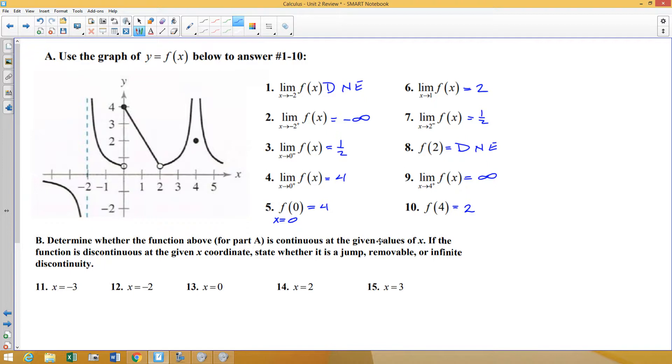Determine whether the function above is continuous. If it is discontinuous, then state whether it's jump, removable, or infinite. At negative 3, so negative 1, negative 2, negative 3 is right here. It looks like I'm blowing straight through negative 3, so that is continuous. At negative 2, that is a vertical asymptote, which is known as an infinite discontinuity. At x equals 0, left and right sides approach finite numbers, but they are different. That creates a jump. Or you can just look at the graph and tell that we are jumping from 1 half up to 4.